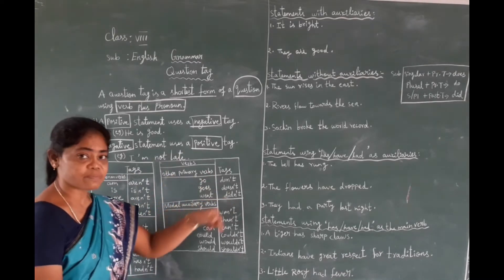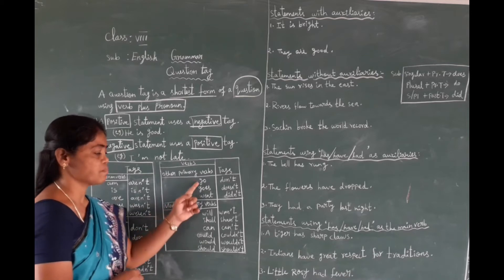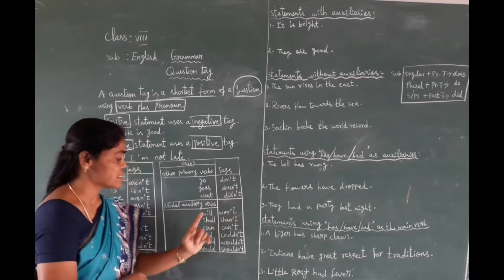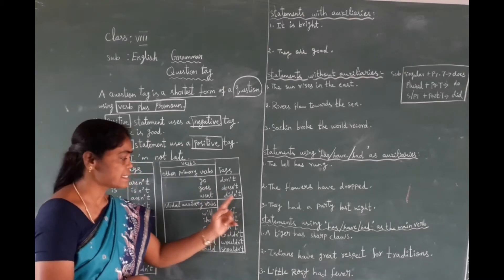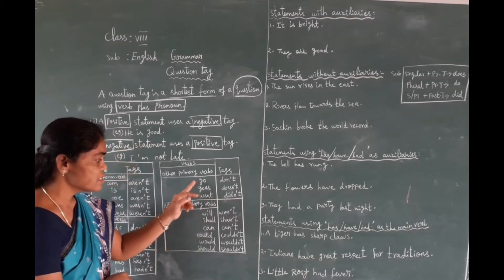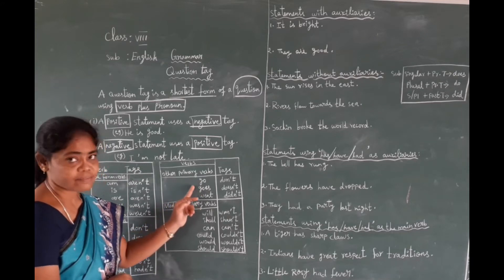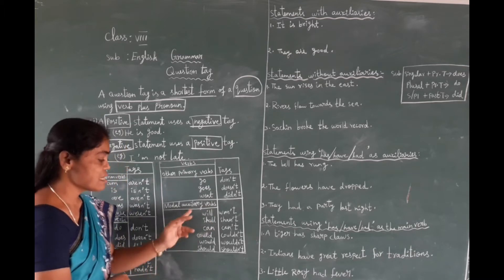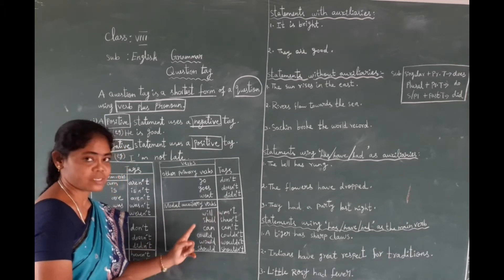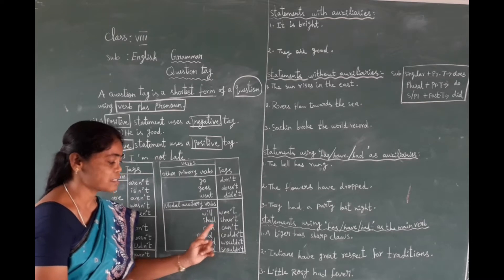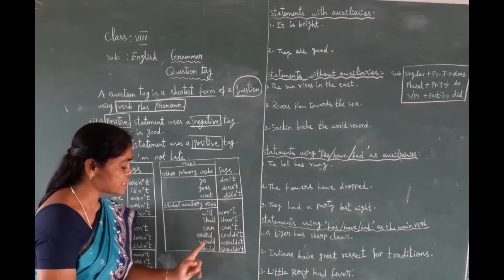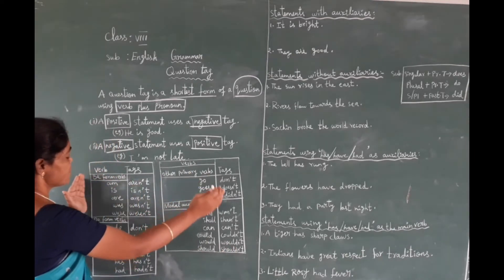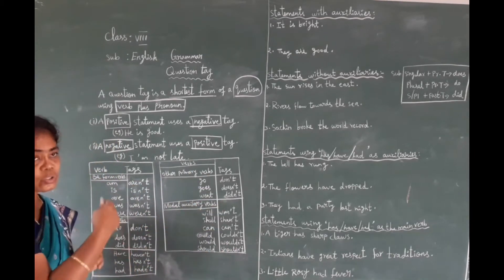For other primary verbs — that is, main verbs — 'go' takes the tag 'don't', 'goes' takes 'doesn't', and past tense takes 'didn't'. For modal auxiliaries: 'will' becomes 'won't', 'shall' takes 'shan't', 'can' becomes 'can't', 'could' becomes 'couldn't', 'would' becomes 'wouldn't', 'should' becomes 'shouldn't'. So these are all the tags we want to use. Positive means negative tag; negative means positive tag.